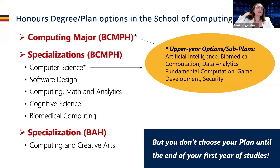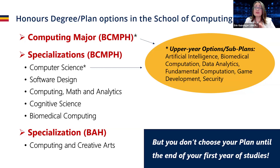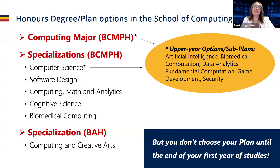The plans that we offer include the computing major, the specializations, and generals and minors. The computing major and the computer science specialization are very similar in that they have subplans or options, and you have to select one of six focuses for your studies. Those specializations are computer science, software design, computing math and analytics, cognitive science, and biomedical computing.